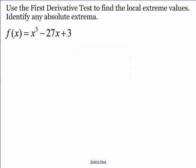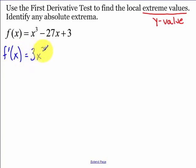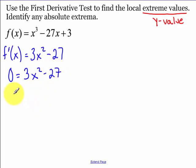Let's do an example using the first derivative test to find the local extrema and identify any absolute extrema. One thing to highlight: local extreme values means we're looking for a y value. You can give me the point, but keep in mind that value means a y number. So let's find our derivative, then set your derivative equal to zero or look where your derivative is undefined to find any critical points.